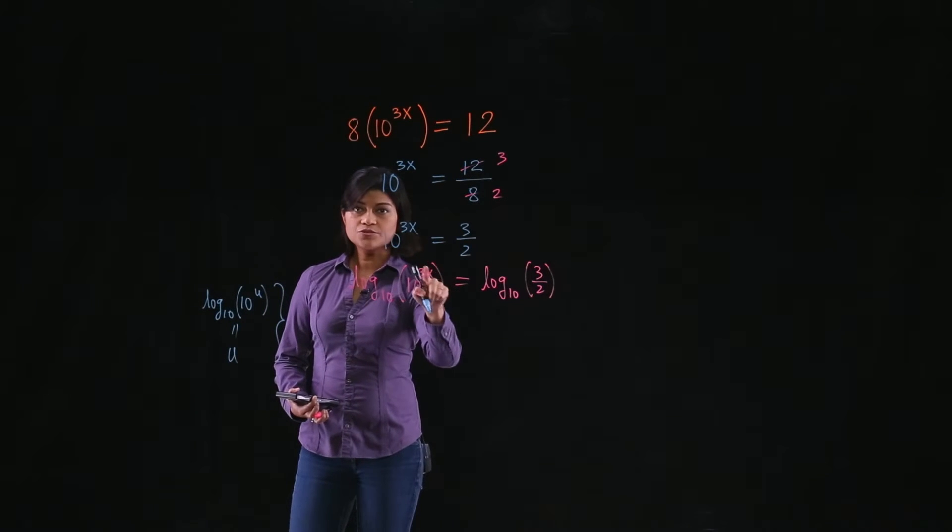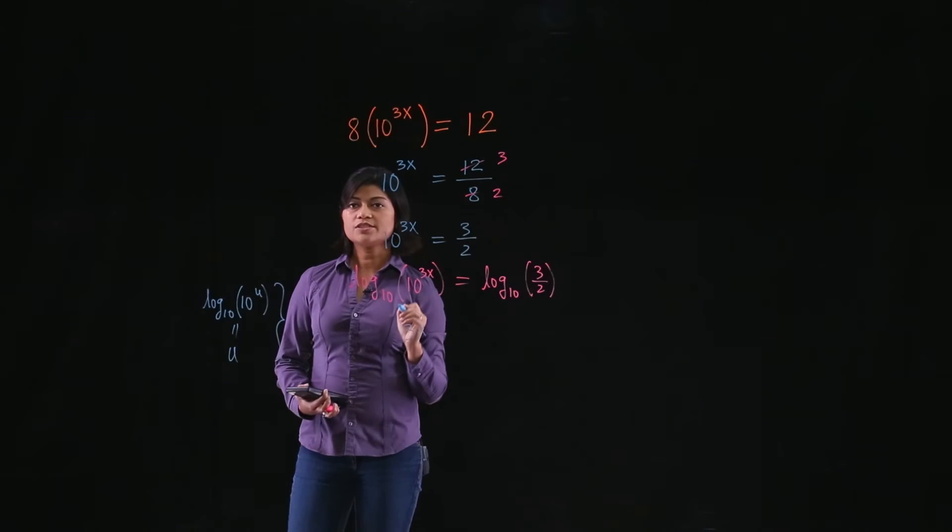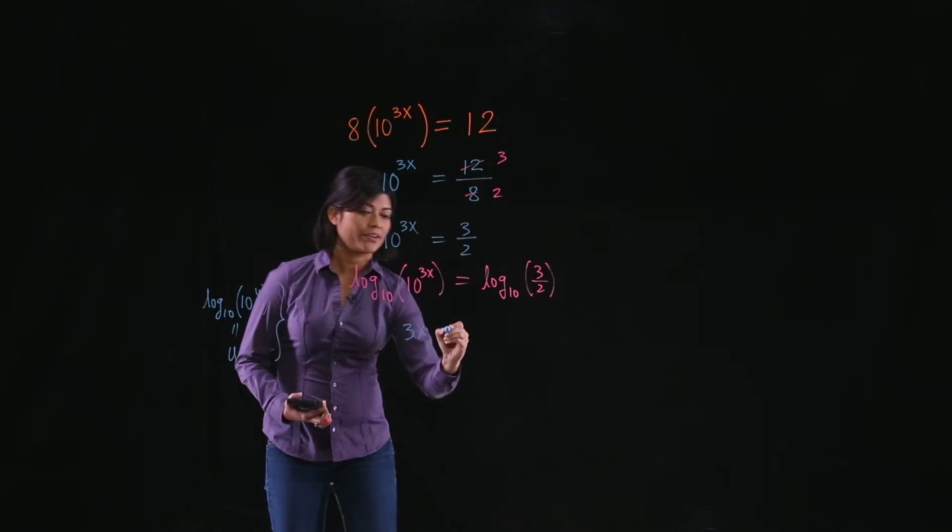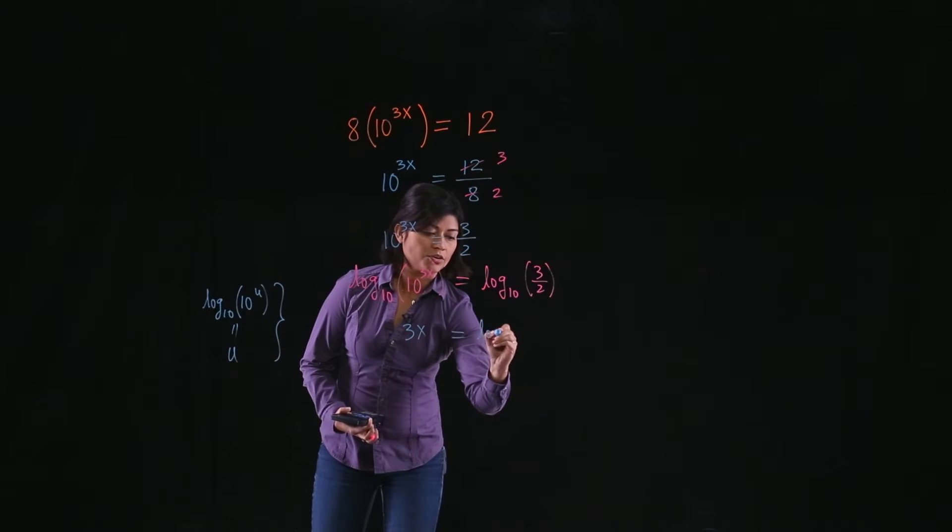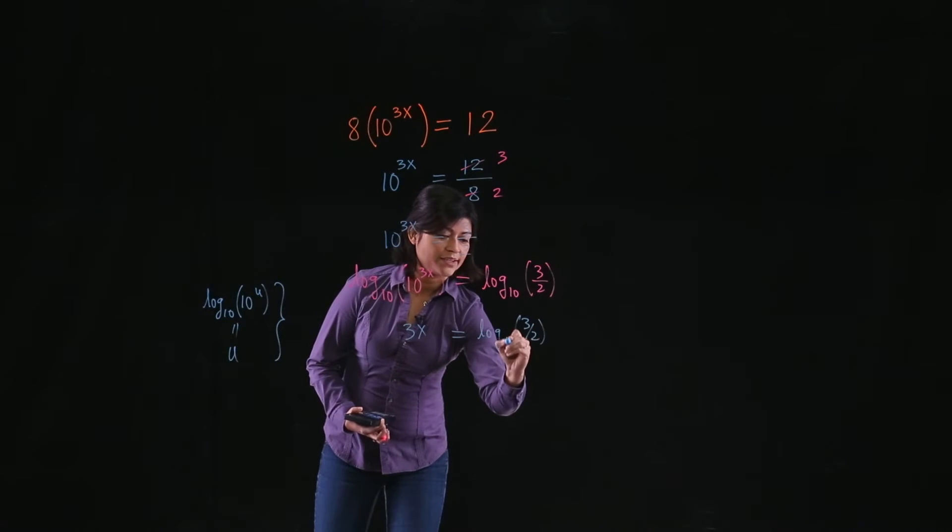So in this case, u is 3x. So you end up getting just that 3x on the left-hand side. And on the right-hand side, you have logarithm of 3 half base 10.